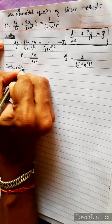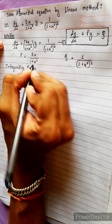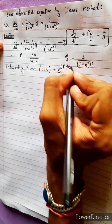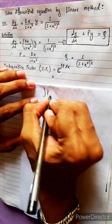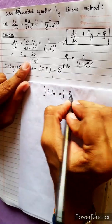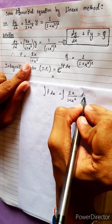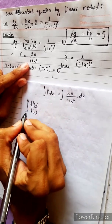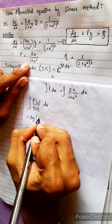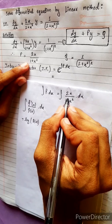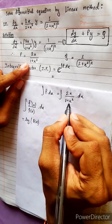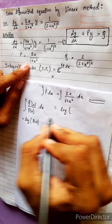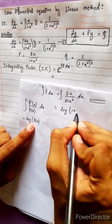The integrating factor equals e to the power of the integral of P dx. So we compute the integral of P dx, where P equals 2x/(1 + x²) dx. The derivative of (1 + x²) is 2x, so this integral equals log(1 + x²).